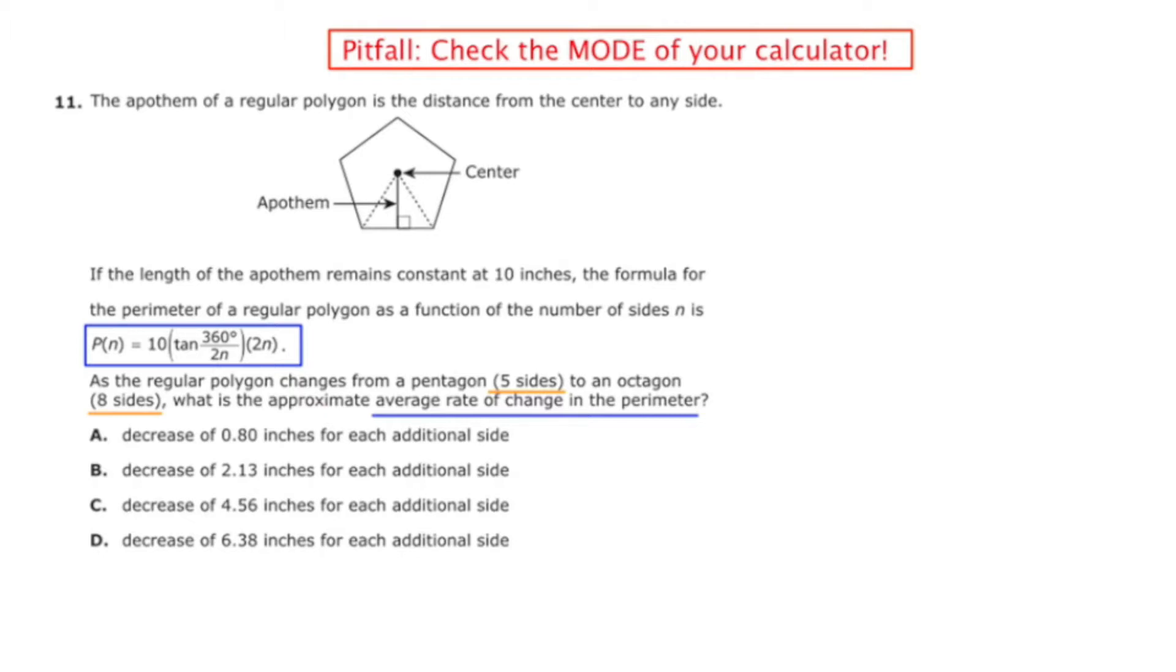This question is a trigonometry question and it tells us that the apothem of a regular polygon is the distance from the center to any side, and then they illustrate that.